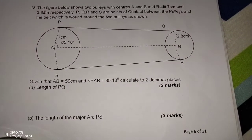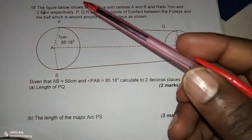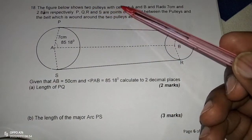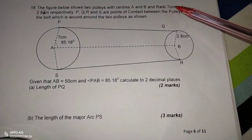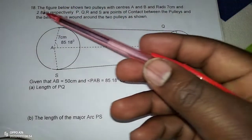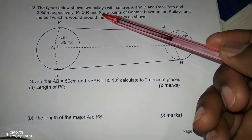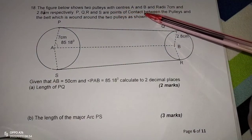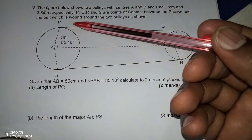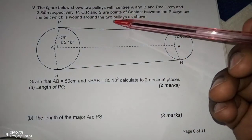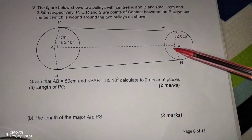We are told that the figure below shows two pulley belts with centers A and B and radii 7 cm and 2.8 cm respectively. P, Q, R and S are points of contact between the pulleys and the belt which is wound around the two pulleys as shown.